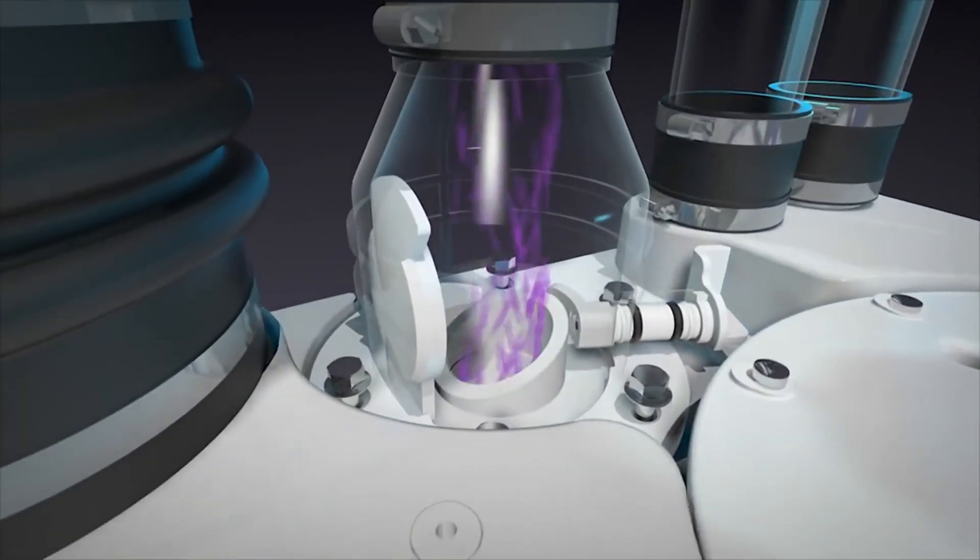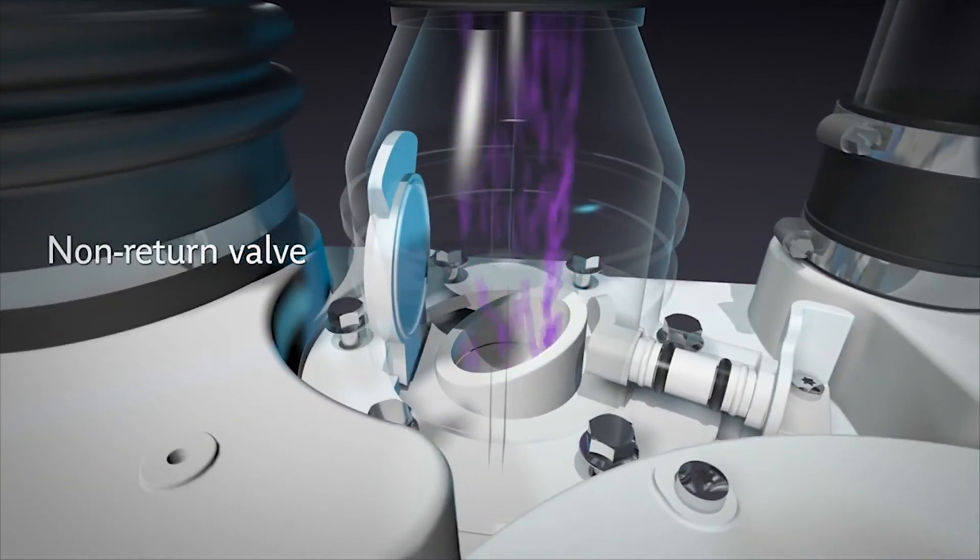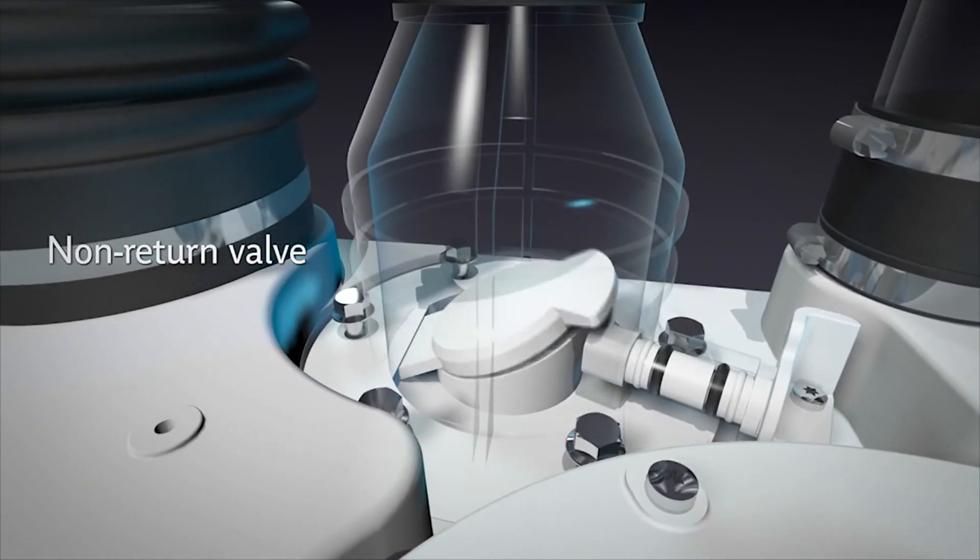The waste travels through the internal discharge pipe. Once the unit turns off, the built-in non-return valve prevents the liquefied waste from traveling back into the pump.